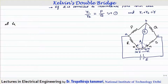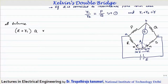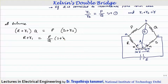At balanced condition, the product of opposite branch impedances will be the same. So we can write: (R + r1) × Q = P × (S + r2), which gives R + r1 = (P/Q)(S + r2). This is equation number 2. Now, before proceeding further, let us substitute the values of r1 and r2 in terms of known parameters.